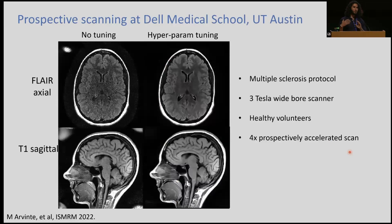We applied this at our hospital on volunteers. The foundation model was trained on fastMRI data, and we applied it at our hospital under a different protocol — different slice thicknesses, different scan times, different sampling acquisitions, a different vendor. We were able to just tune the hyperparameters of the algorithm to get really good quality at a 4x prospectively accelerated scan. In this sense, it's really attractive as a means of deploying these types of models to the hospital.